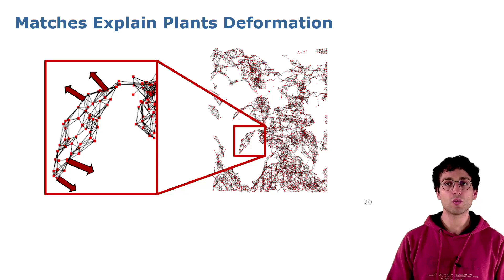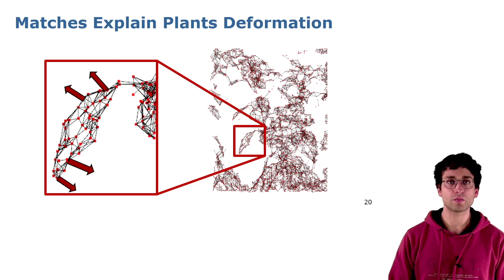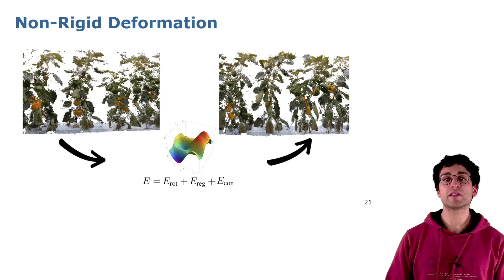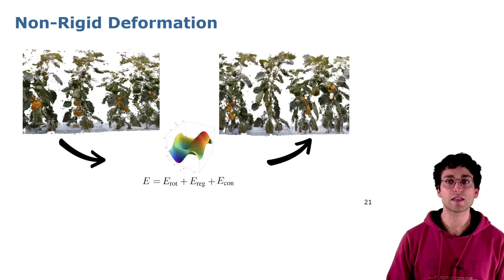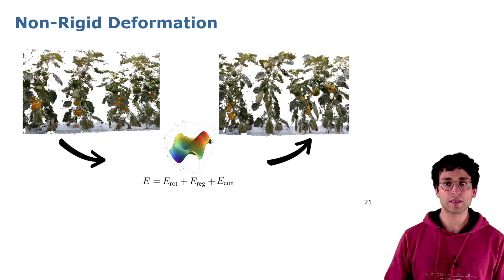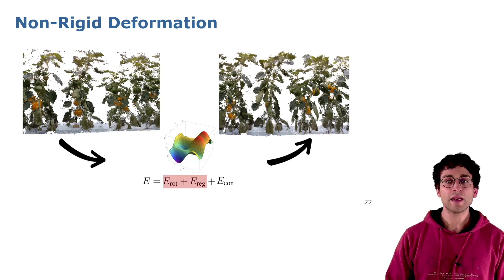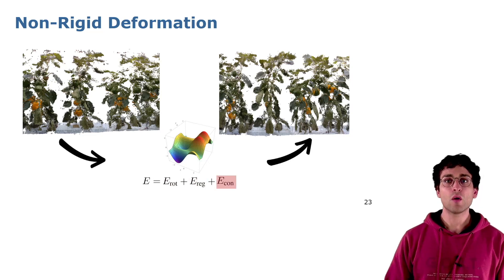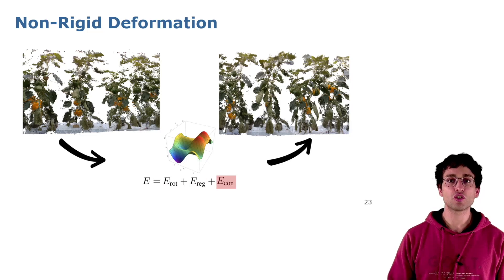The matches we computed before give us information about where each node of the graph should be after the deformation. This serves as input to our deformation problem. We solve our deformation as an optimization problem — we want to deform the reference 3D map to align it with the new observations. We set up an optimization in which we want to position each matched point in its new position, forcing local shape consistency as a constraint. The energy function that we minimize is represented by two terms: one enforcing local shape consistency and avoiding unrealistic deformations, and the other minimizing the distance between each graph node and its new target position.